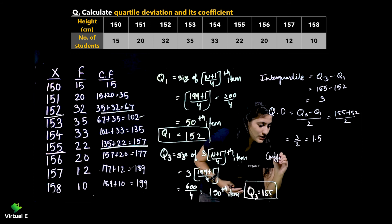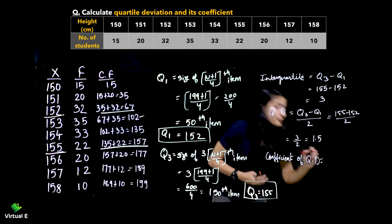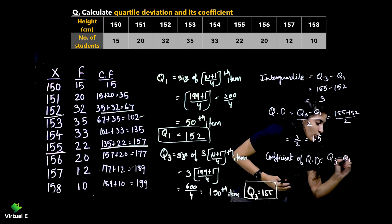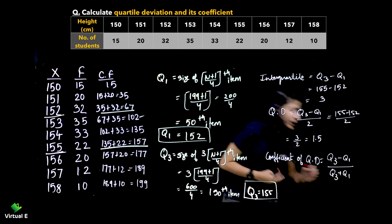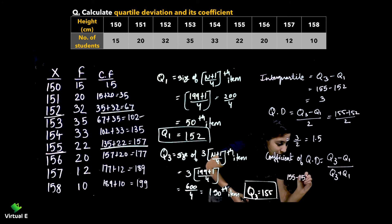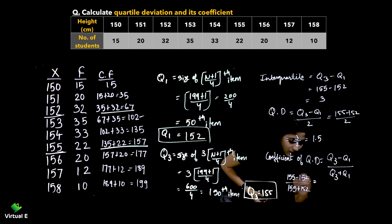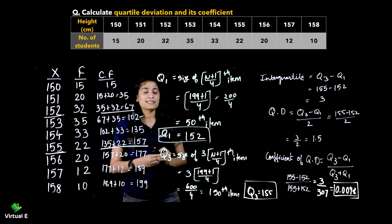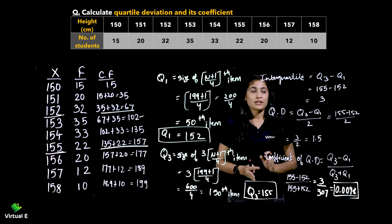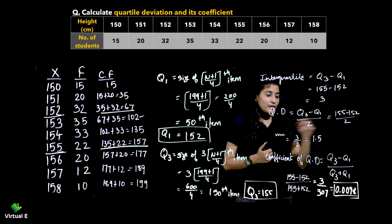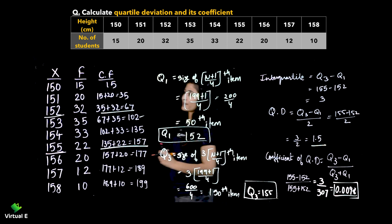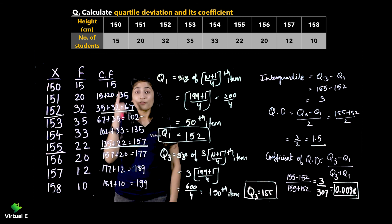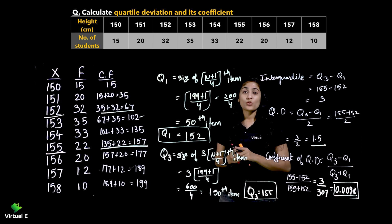Now find the coefficient of QD using the formula Q3 minus Q1 upon Q3 plus Q1. That is 155 minus 152 upon 155 plus 152, giving 3 upon 307. The final answer is 0.0098. To summarize: for discrete series, the first step is always to find cumulative frequency, then Q1 and Q3, followed by interquartile range, quartile deviation, and coefficient of quartile deviation. Now let us move on to the continuous series.